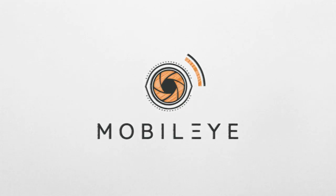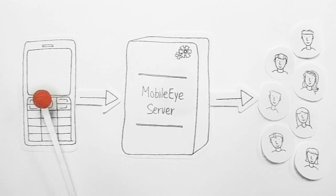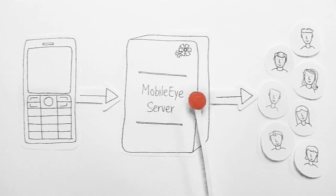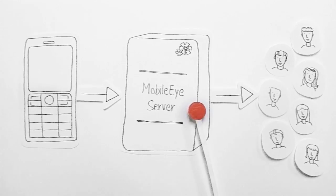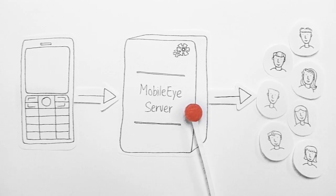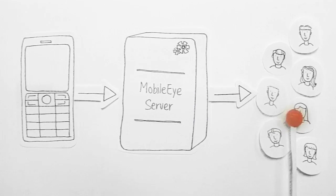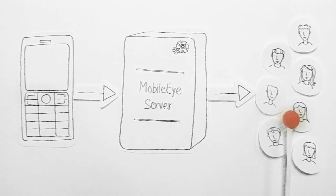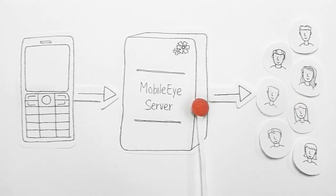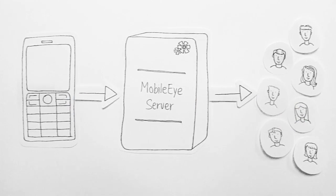With Mobile Eye, the client takes a picture on his phone and sends it to our server. The server processes the image to extract useful information such as colours. It then uses crowdsourcing technology to gain detailed information on the image. The response is sent back to the client as an audio stream.